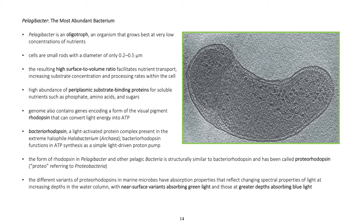Pelagibacter's genome also contains genes encoding a form of the visual pigment rhodopsin that can convert light energy into ATP. Bacteriorhodopsin is a light-activated protein complex present in the extreme halophile Halobacterium archaeon, and functions in ATP synthesis as a simple light-driven proton pump. The form of rhodopsin in Pelagibacter and other pelagic bacteria is structurally similar to bacteriorhodopsin and has been called proteorhodopsin — referring to proteobacteria. Different variants of proteorhodopsins in marine microbes have absorption properties that reflect the changing spectral properties of light at increasing depths, with near-surface variants absorbing green light and those at greater depths absorbing blue light.